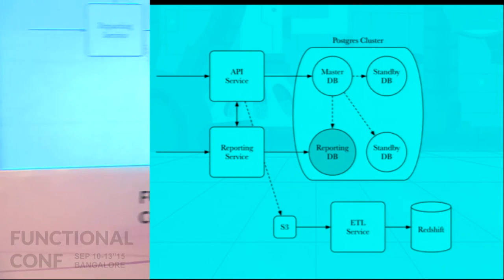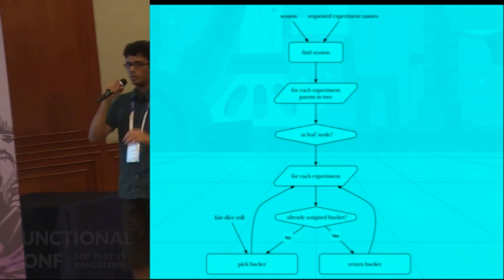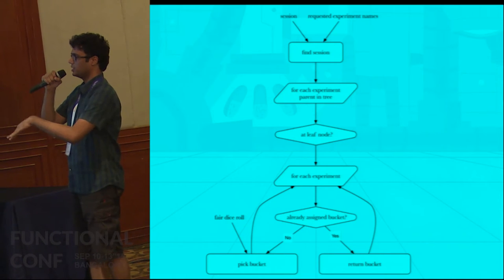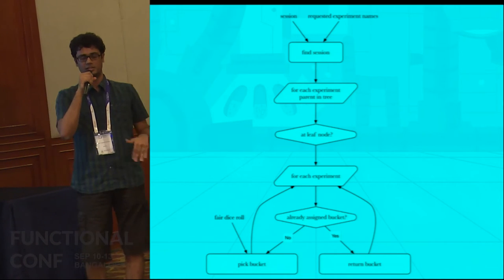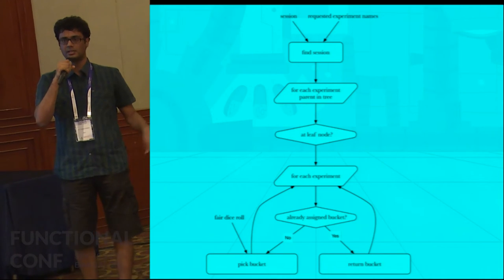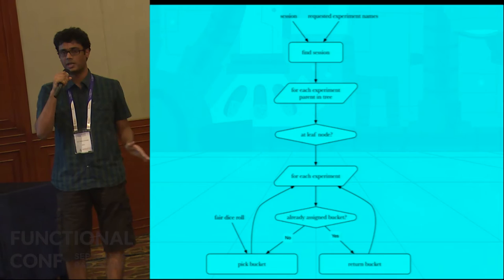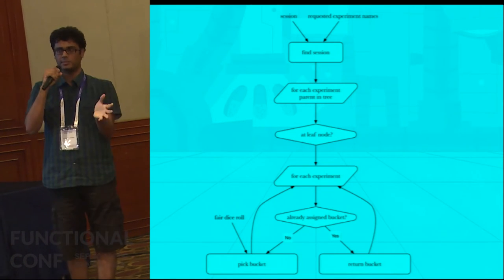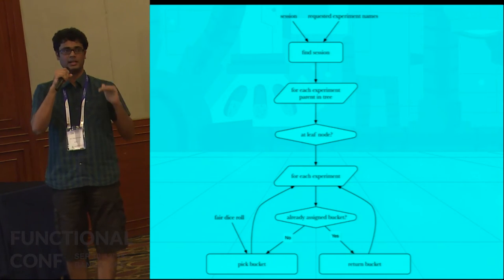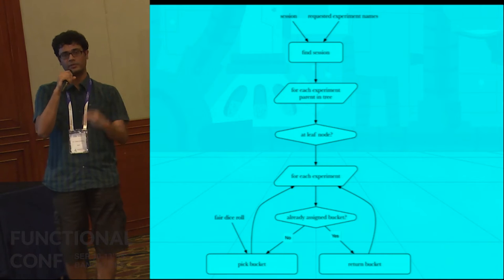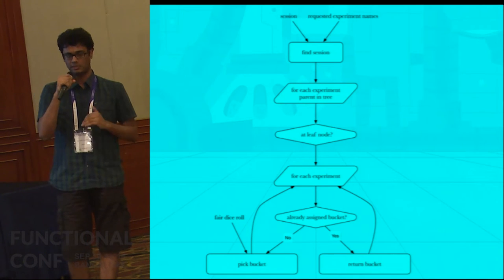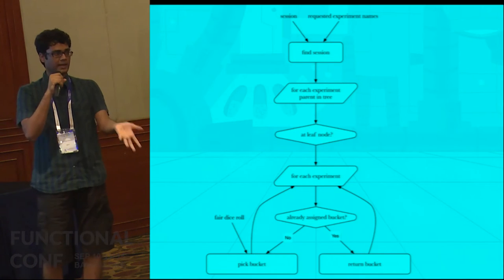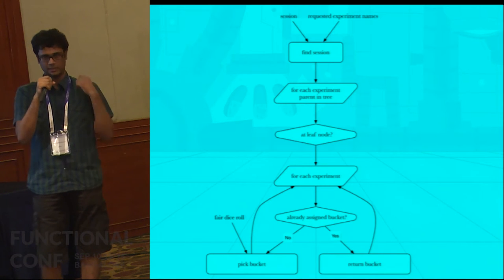In the API service, one of the more interesting parts is how we bucket users. Here's a simplified version of that — it's basically a tree traversal. We walk the tree breadth-first, and for each level of experiments, for each experiment, we bucket you. The way we bucket you: if you have been given a bucket before, we give that same bucket back to you — this applies at multiple levels: during the session, on that device, on that group of devices. If you haven't been assigned to this experiment before, we roll a fair die and put you into one of the treatments.